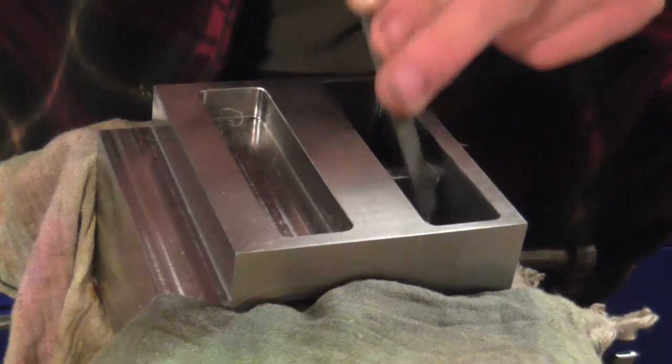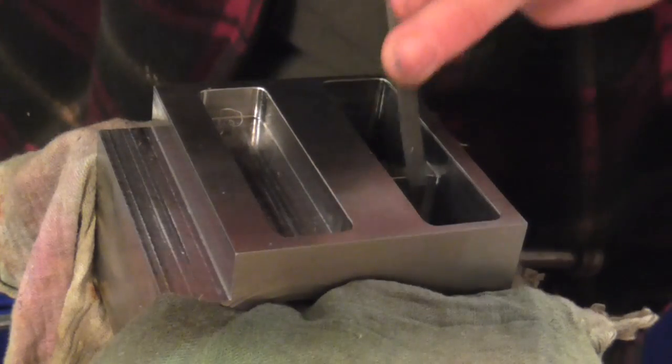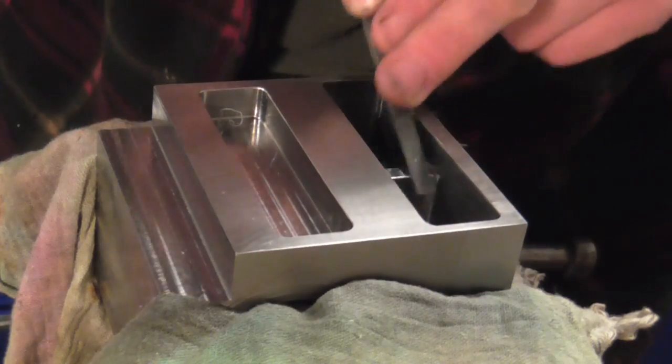If I'd wanted to put a chamfer on these edges I could have actually done that in the milling machine, but I only want a break edge, so needle file and deburring tool seems to be the way to go.